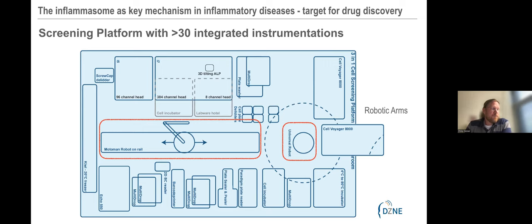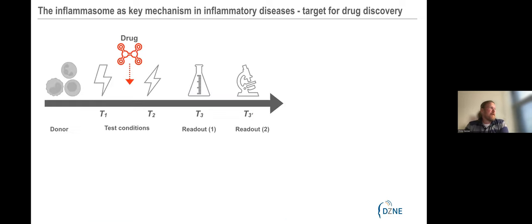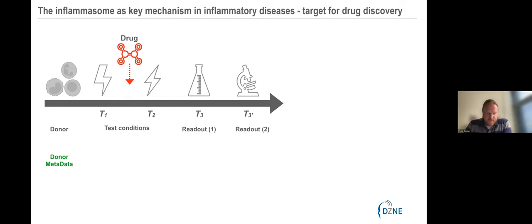We have two Cell Voyager 8000 integrated and everything is connected by two robotic arms. This very complex automation really produces reliable and robust results over months and years. When you think about automating an assay, instrumentation alone is not enough. You have a lot of information to collect during assay plate processing — starting with the donor: height, weight, sex, age, and so on. This generates a lot of metadata, plus all the assay information, incubation times, plate processing details, and compound information.